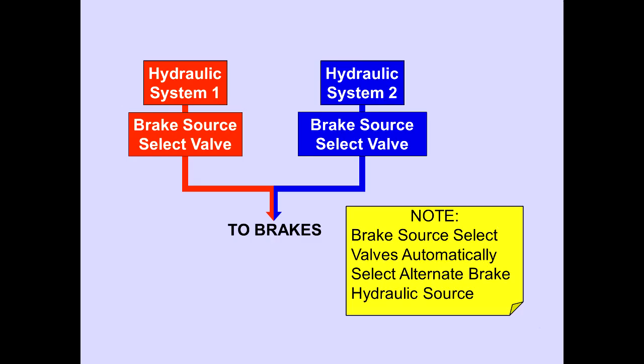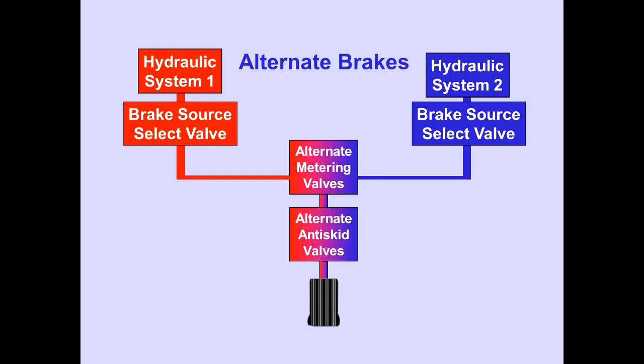Source select valves automatically select the alternate brake system hydraulic source. The number 1 or the number 2 hydraulic system then pressurizes the alternate brake system. Since the number 1 and number 2 brake source select valves are similar, we will discuss the operation of only the system 1 source select valve.